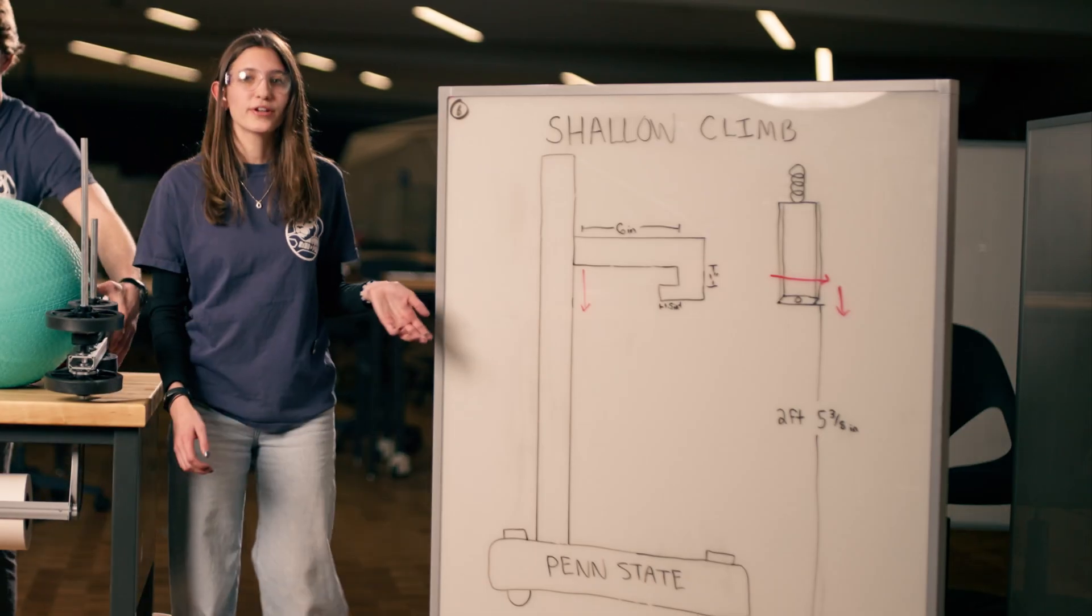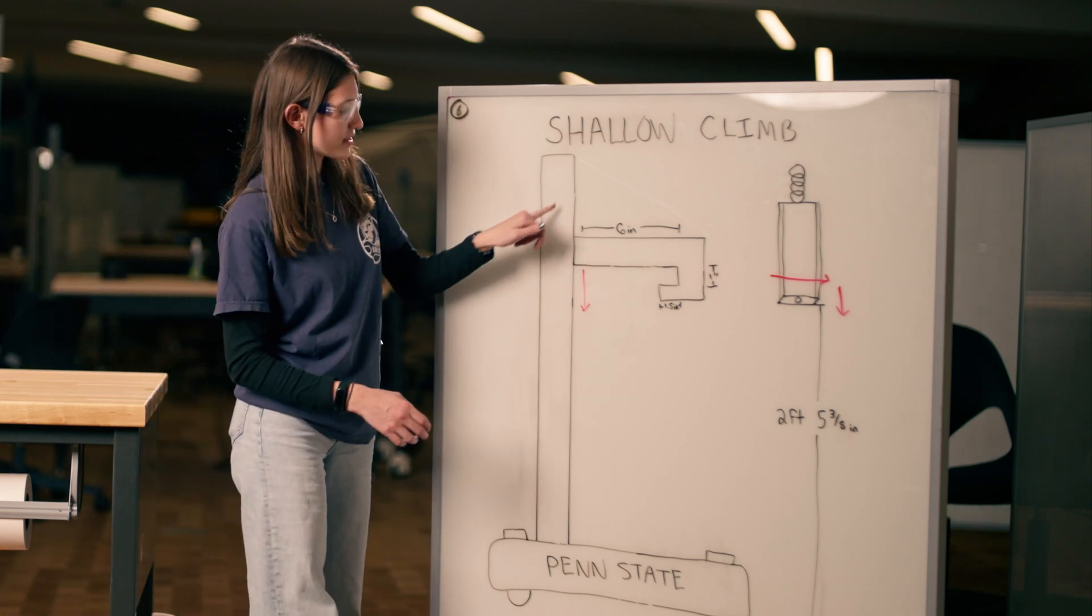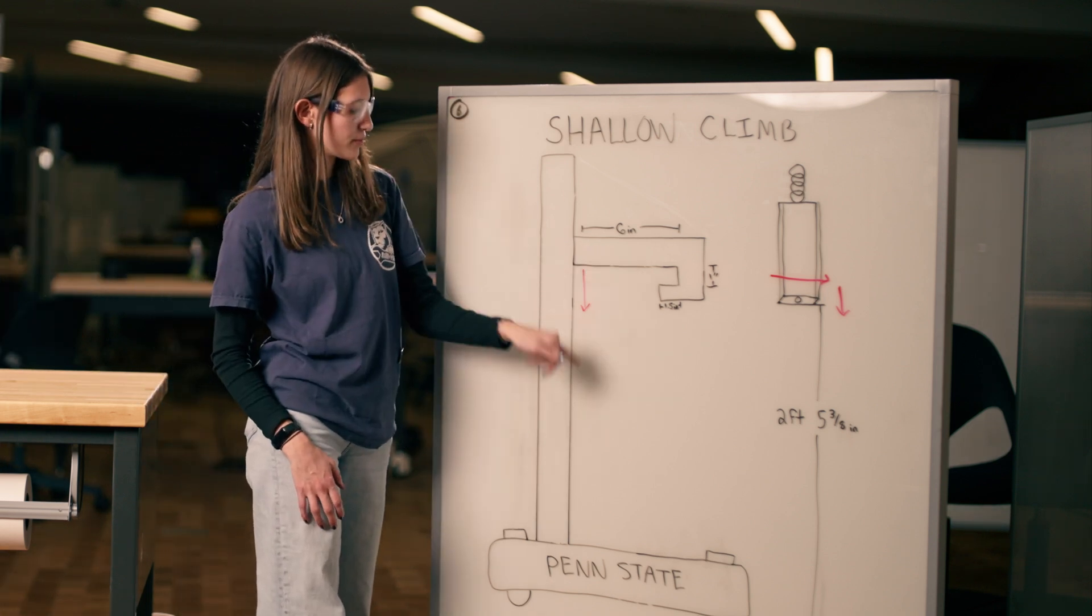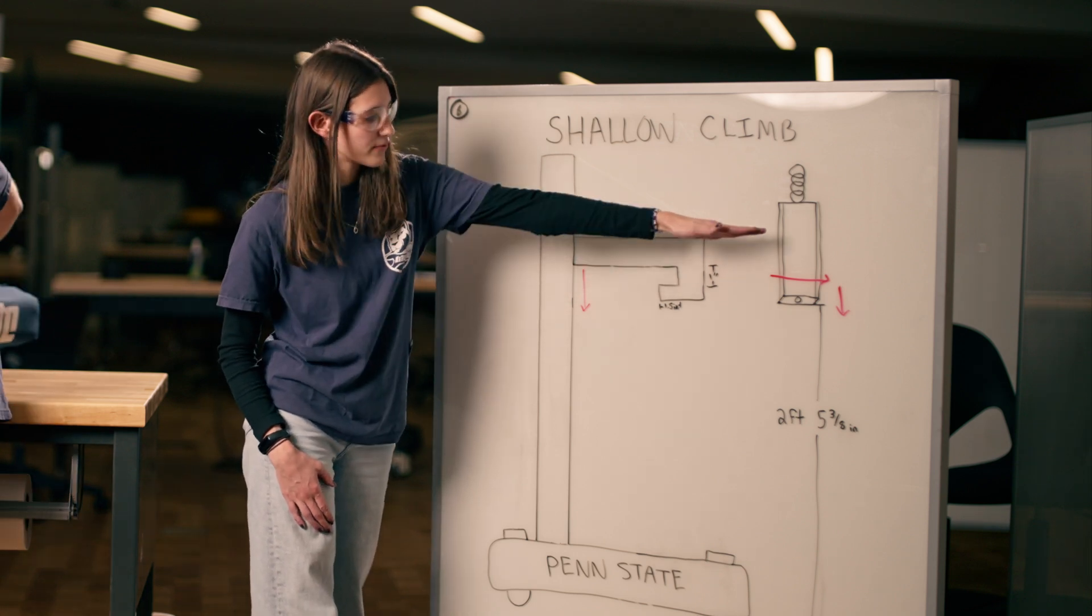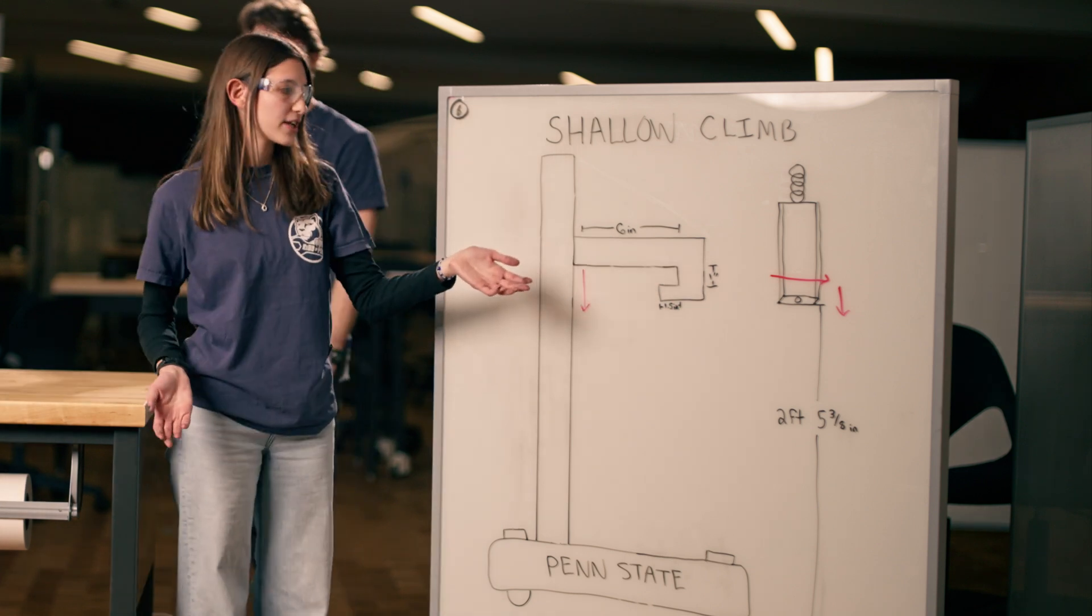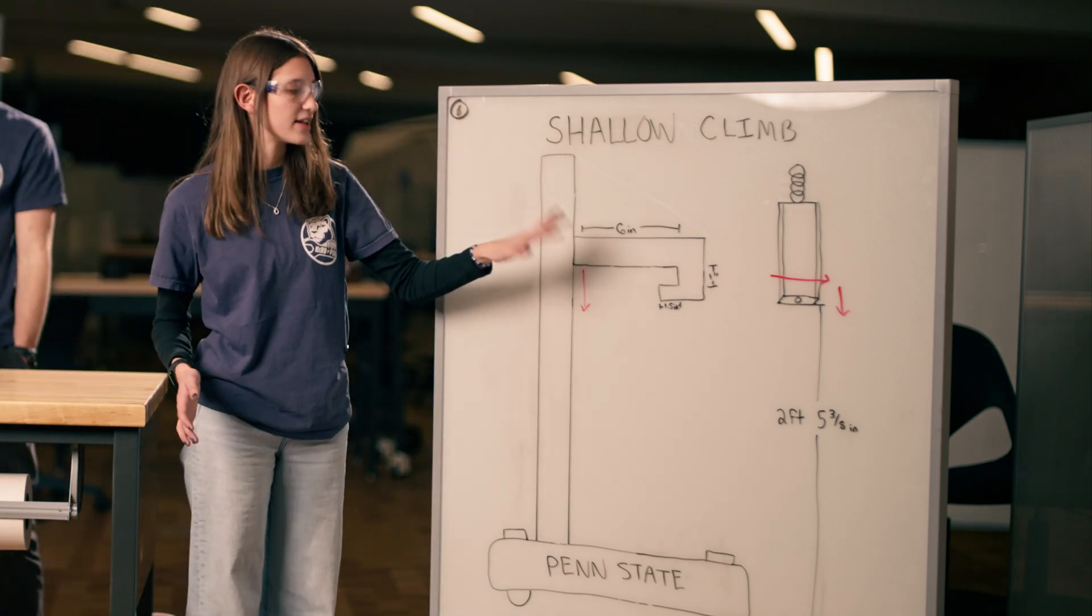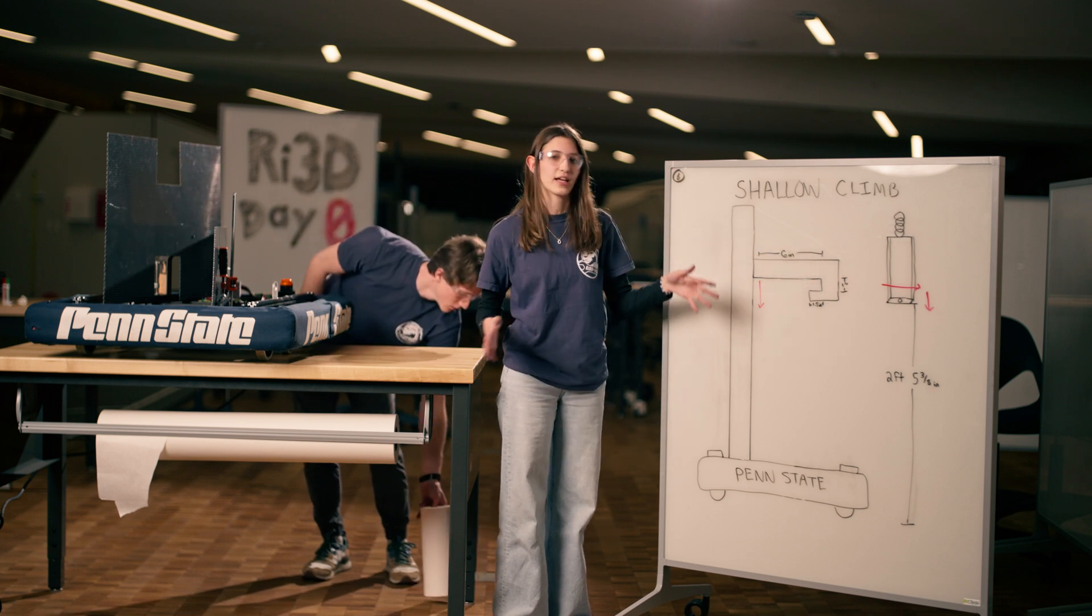Our sixth prototype idea is for the shallow climb on the cage. This is our elevator, so this will be able to move up and down. What we'll do is test if we can drive forward and then bring this down and around. Tomorrow we want to make sure that this is feasible and that it's actually easy for this to attach onto here instead of having to spend a lot of time lining it up.